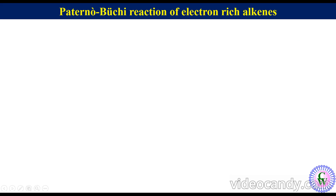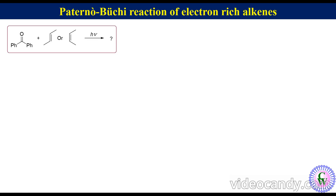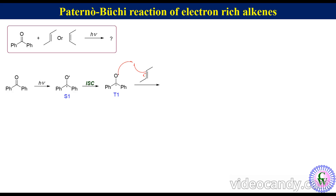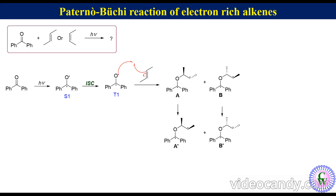Let's examine the reaction of benzophenone with cis- and trans-2-butene to study the non-stereospecificity of the Paternò-Bùchi reaction. Benzophenone upon irradiation goes to the excited singlet state, which after inter-system crossing enters the excited triplet state. If the reactant is trans-2-butene, it reacts to produce 1,4-diradicals A and B. These diradicals can undergo rotation about the C–C bond before cyclization to produce conformational isomers A' and B'. Cyclization of A, B, A', and B' respectively gives compounds 1, 2, 3, and 4.